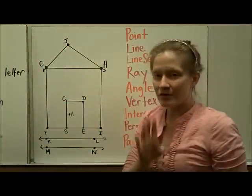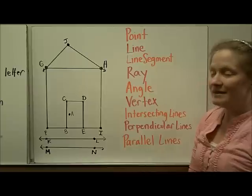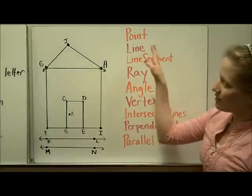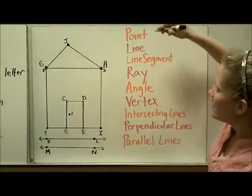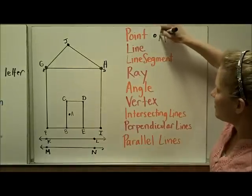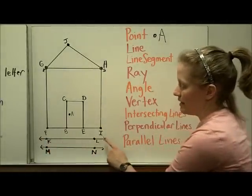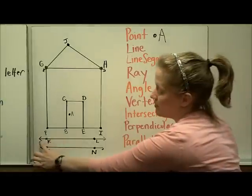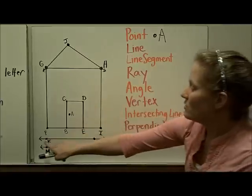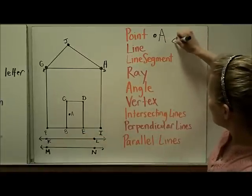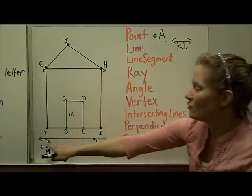Now let's put together all of those definitions and vocabulary words and find them in this drawing. There are lots of points, but here's one that's not part of any line — the doorknob is a point, and we can call it point A. I see a line here, and I know it's a line and not a line segment because it has arrows on either side showing it goes on forever infinitely. We'll call this line KL, naming two points on the line.